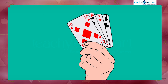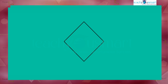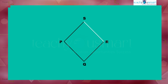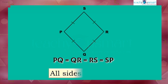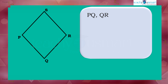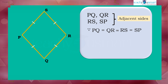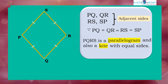This is a deck of playing cards — see this symbol, diamond. It's a parallelogram. Let's compare its sides: in a parallelogram PQRS, the sides PQ, QR, RS, and SP are equal. PQ and QR is a pair of adjacent sides; another pair of adjacent sides are RS and SP. Since the adjacent sides are equal, parallelogram PQRS is a kite.